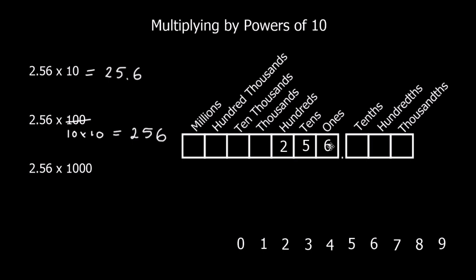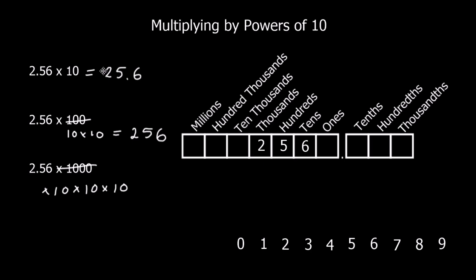Starting again with 2.56, we're going to multiply by 1,000, which is 10 × 10 × 10. So we multiply by 10 three times, moving the digits up three times. We get 2 thousands, 5 hundreds, and 6 tens, with nothing in the ones column. We need a zero in the ones to make the number make sense, so the answer is 2,560.